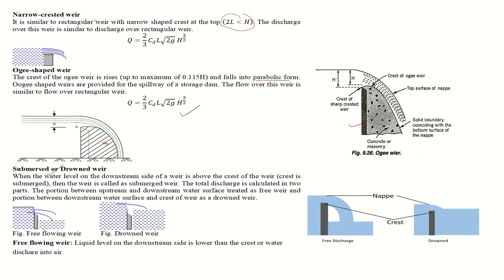Next is the submerged weir, also called a drowned weir. In the submerged condition, water flows over the weir into the downstream water itself rather than into the atmosphere — this is the drowned weir condition. The free discharge weir is where water flows freely into atmosphere downstream. For a submerged weir, the total discharge is calculated as the difference between your upstream side and your downstream side head.